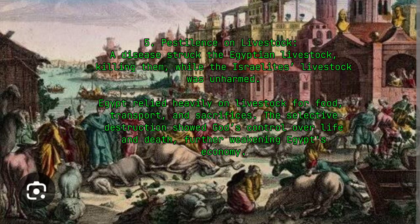5. Pestilence on livestock. A disease struck the Egyptian livestock, killing them, while the Israelites' livestock was unharmed. Egypt relied heavily on livestock for food, transport, and sacrifices. The selective destruction showed God's control over life and death, further weakening Egypt's economy.